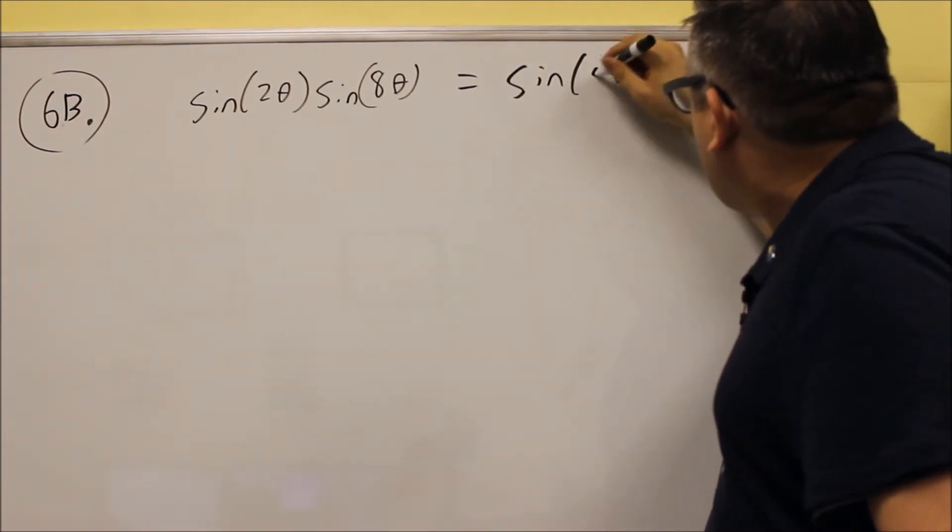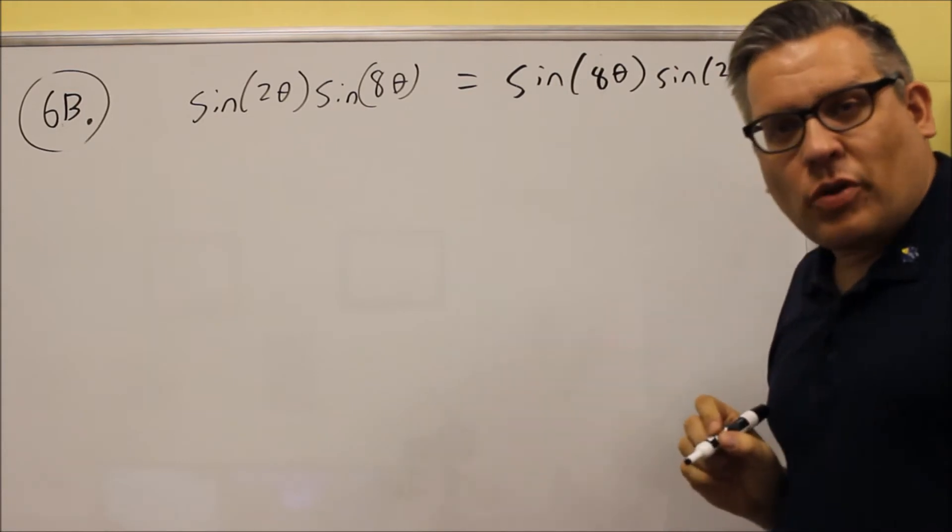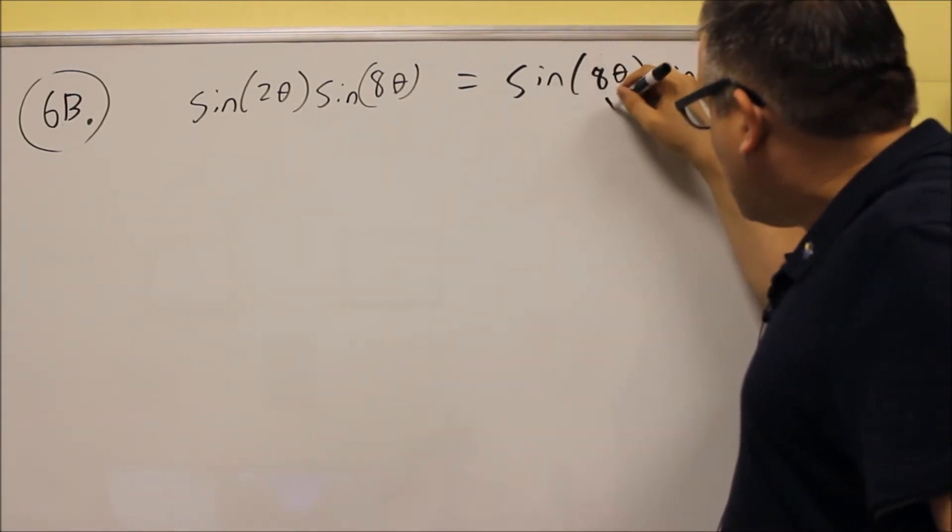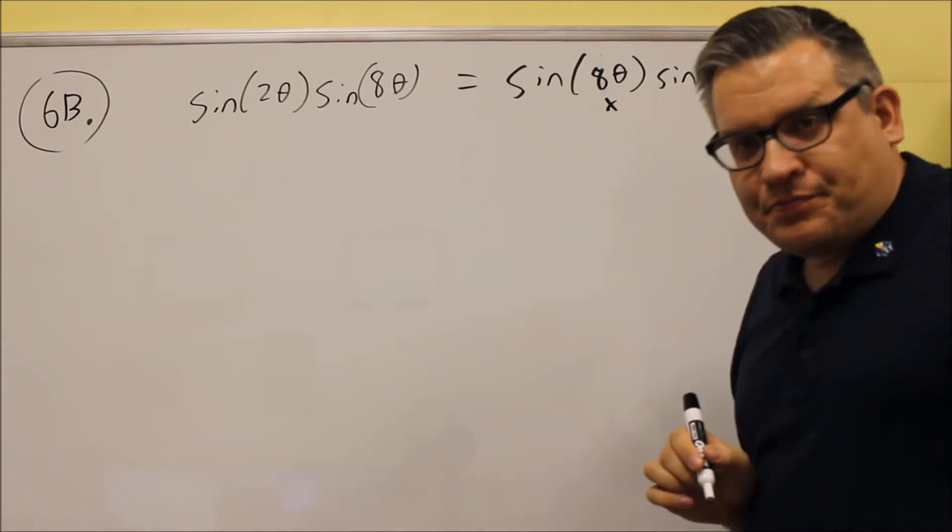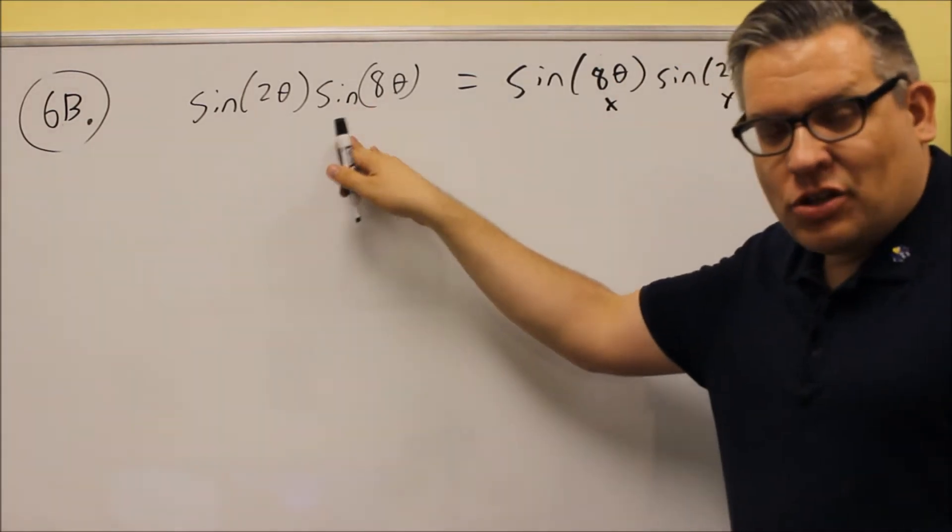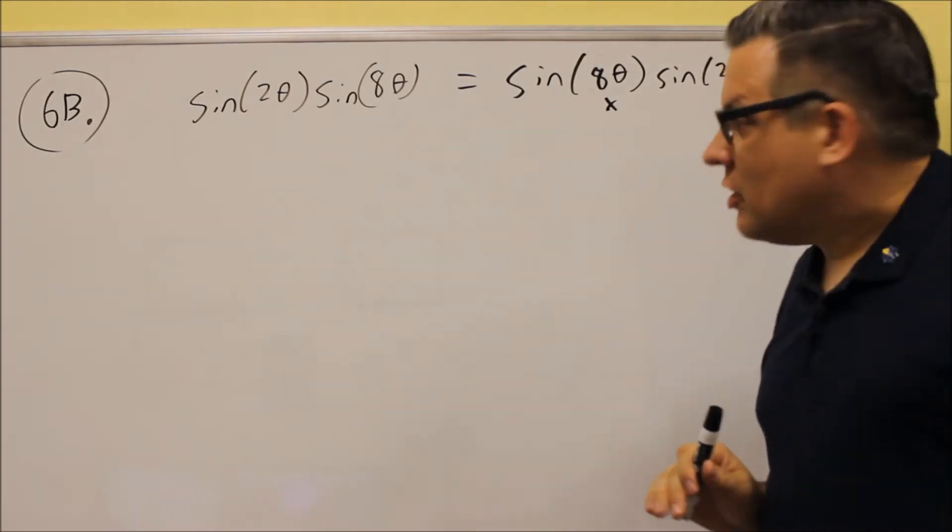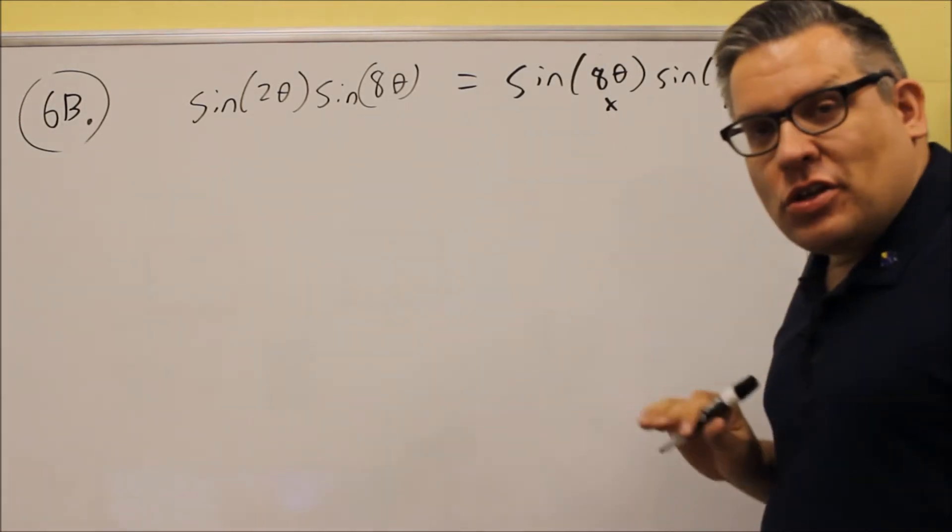Now the reason why I switched the order there is because I want the x to be the larger one. When you have multiplication, order does not matter here in this case. So I can just switch those around and let x be the bigger one.